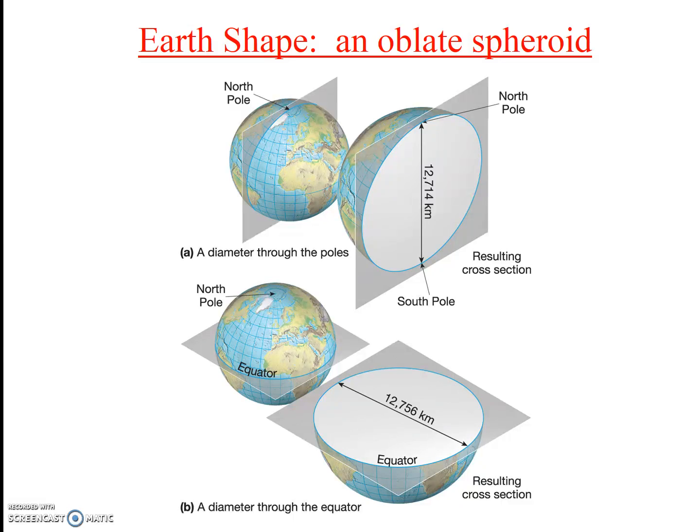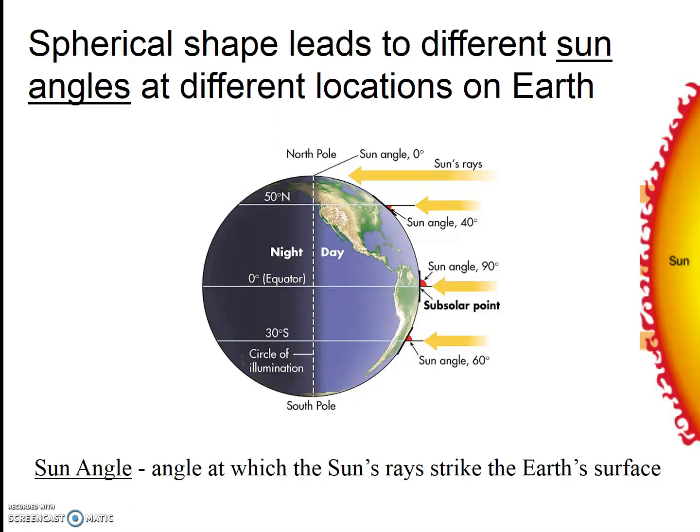Now realistically, the slightly oblate nature of the Earth's shape is not going to be important for us in terms of the Earth features and processes that we will study in this class. However, the spherical shape of the Earth results in different sun angles at different locations, and this is important.